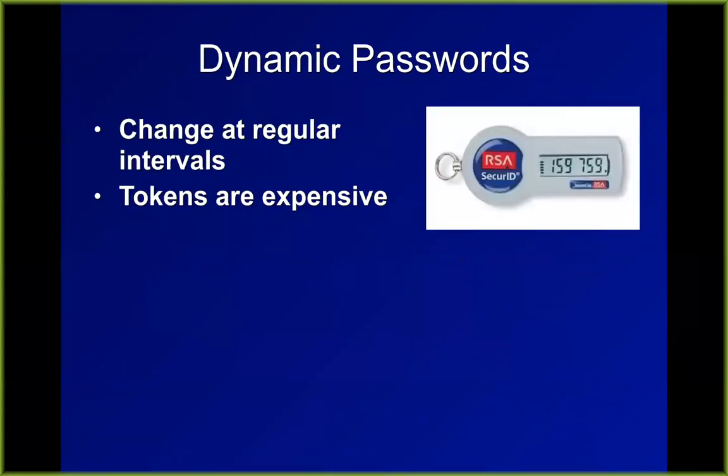Dynamic passwords are these RSA tokens where it just changes on some periodic basis, like every 30 seconds. You type in your password, then it asks for your secure ID number and you type that in. These are used by big insurance companies, military contractors, and many others and are trusted very much, although the Chinese did hack RSA and steal the master key a few years ago, or so the rumor goes. We know they got hacked — they never quite admitted what happened, but had to reissue tokens to anyone who would sign a confidentiality agreement not to say what happened.